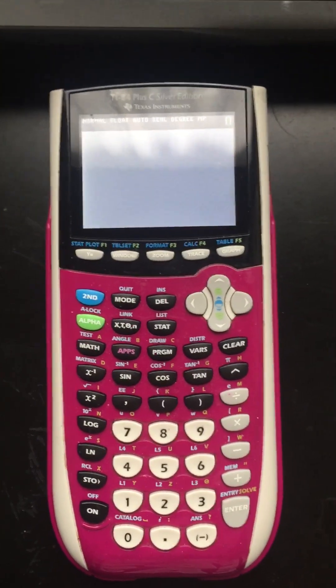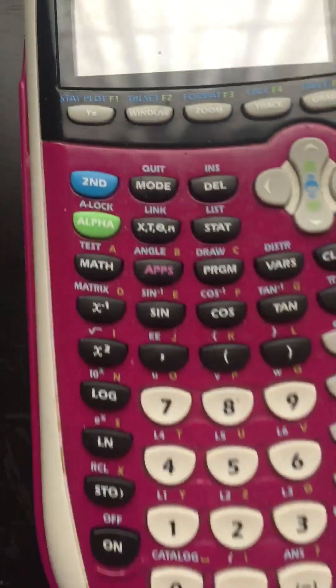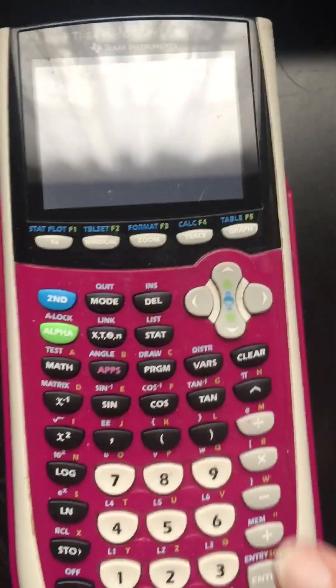Alright, so the key is this button right down here, this is STO, that stands for store. My calculator is already on, you would turn it on right there. And I'm gonna put in Avogadro's number.